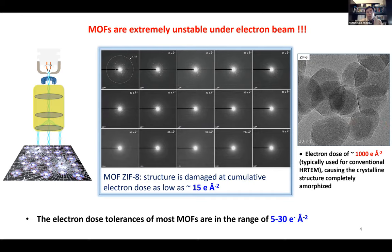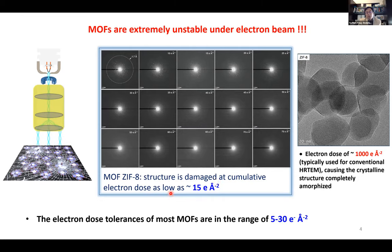To quantitatively understand the beam sensitivity of ZIF-8, we conducted electron diffraction experiments to monitor the structure evolution under electron beam irradiation. It turned out that when the cumulative electron dose reached as low as 15 electrons per square angstrom, structure damage occurs. This value is very low — about two orders of magnitude lower than the conventional electron dose used.